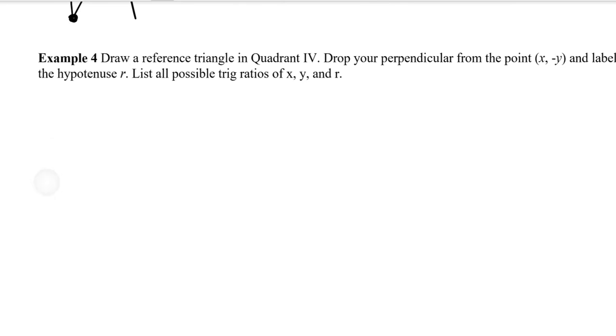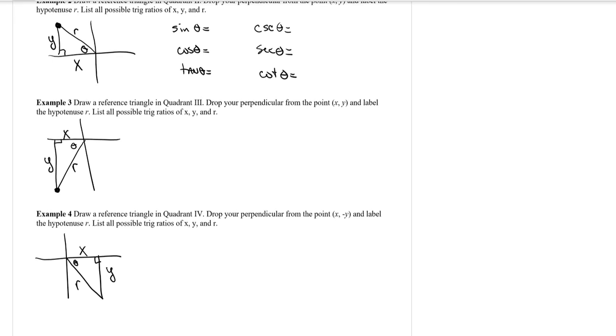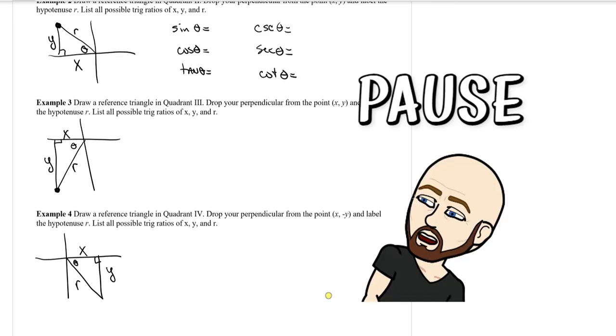And then lastly, we're going to have quadrant number four. So quadrant number four, our reference triangle would look like this. Theta is closest to the origin, and from there we would have our x-coordinate, our y-coordinate, and then our radius. So for all of these, go ahead and find sine, cosine, tangent, secant, cosecant, cotangent, and come on back in a moment after you've got all four of those done, and let's see how you did.